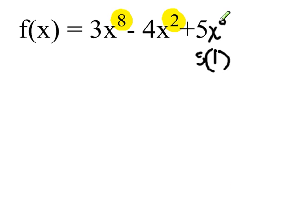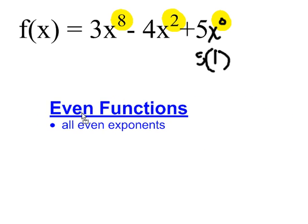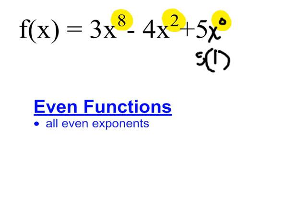So 0, because it is also even, means that this is an even function, because even functions have all even exponents. Sometimes students get confused because of these odd coefficients, 5 and 3, but we don't care about the coefficients, they can be even or odd. All we care about are the exponents: the 8, the 2, and the 0 are all even numbers.